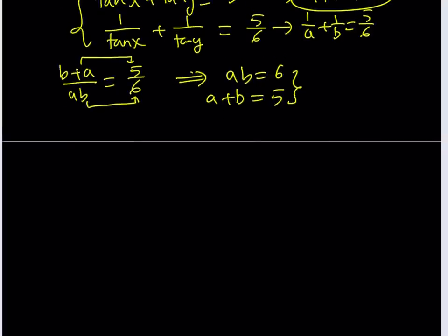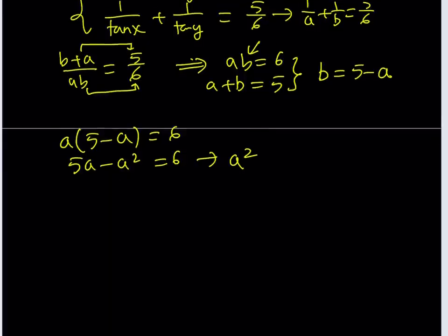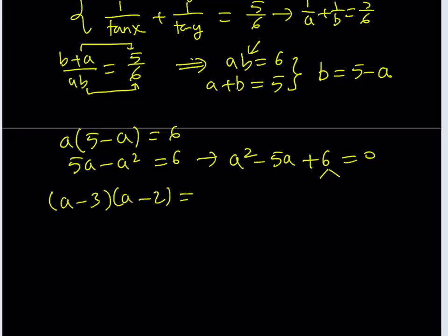So this system is quadratic. You can basically use substitution here, replace b with 5 - a. We get a(5 - a) = 6, and then 5a - a² = 6, and then if you put everything on the positive side, a² - 5a + 6 = 0. This is a factorable trinomial. It can be written as (a - 3)(a - 2) = 0.